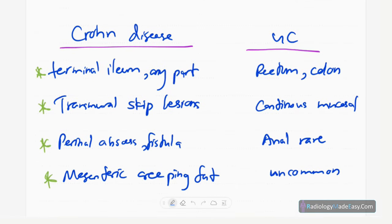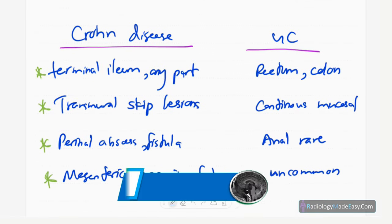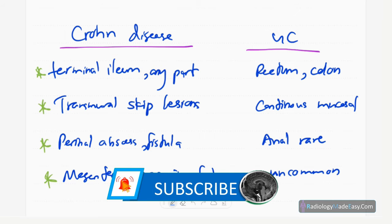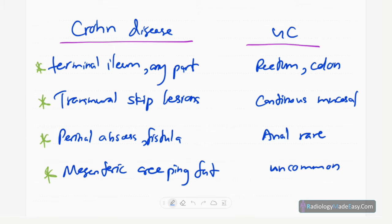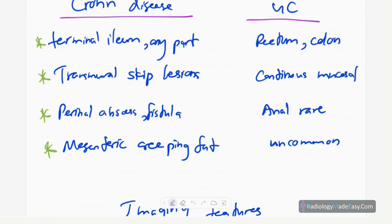We need to differentiate between Crohn's disease and ulcerative colitis. In Crohn's disease, there's common involvement of the terminal ileum, though it can involve any part of the GI tract. In ulcerative colitis, the rectum and colon are involved — the rectum is the commonest site. There are transmural skip lesions in Crohn's disease, which is radiologically important to identify. In contrast, ulcerative colitis has continuous lesions and superficial ulcer or mucosal lesions.